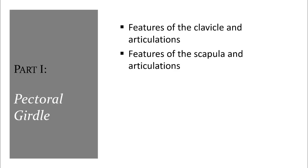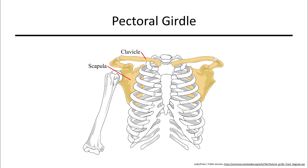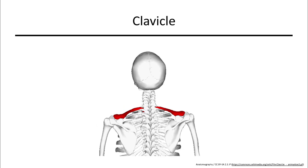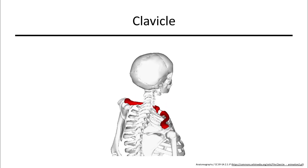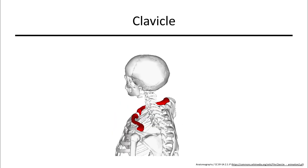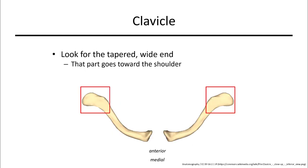Beginning with the pectoral girdle, it's made of two bones: the clavicle and the scapula, more commonly known as your collarbone and your shoulder blade. The clavicle is flat, extending from your shoulder and moving medially as it goes anterior. When looking at a single clavicular bone, orient it by looking for the wide, tapered end — that part faces out towards the shoulder — where the blunt end is the more medial portion that goes against the sternum.